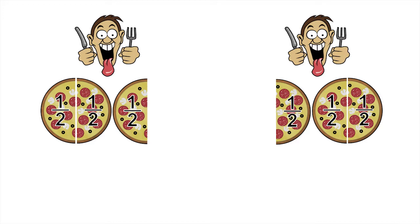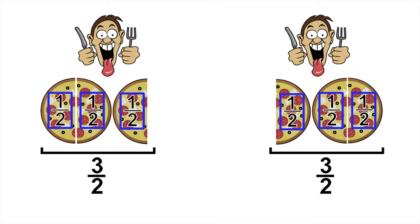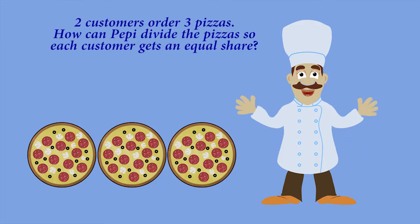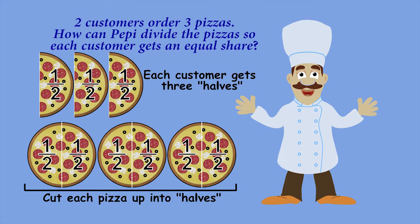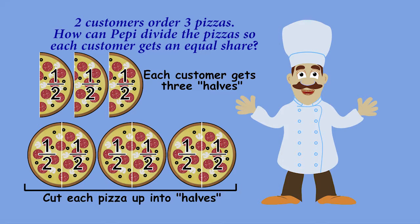Now each customer gets one half of the first pizza, one half of the second pizza, and one half of the third pizza, which adds up to a total of three halves for each person. So I cut each pizza up into halves and give each customer three halves. Thank you so much for helping Peppy!